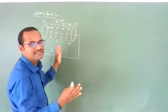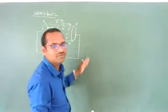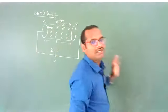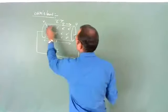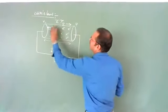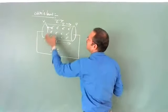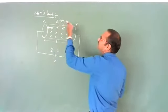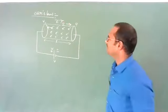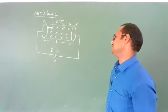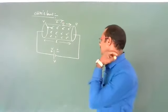Conventional current always flows in the opposite direction to the flow of electrons. If electrons are flowing in one direction, conventional current flows in the opposite direction.